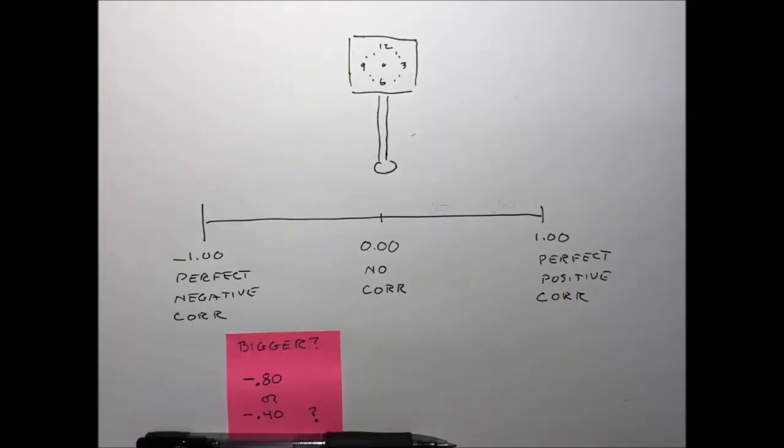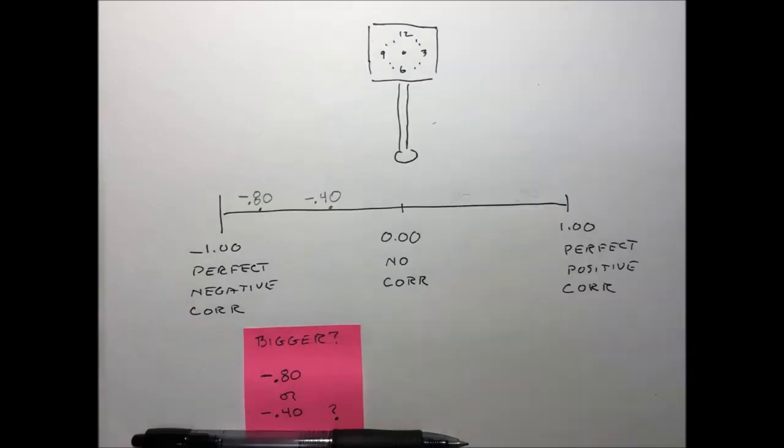Let's try a harder one. Which is larger, minus 0.80 or minus 0.40? Which one is farther from the zero point? Which one is closer to perfection? At which place has the pendulum of the clock swung farther?